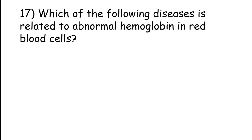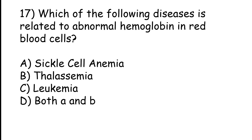Which of the following diseases is related to abnormal hemoglobin and red blood cells? Sickle cell anemia, thalassemia, leukemia, Both A and B. The correct answer is option D, Both A and B.